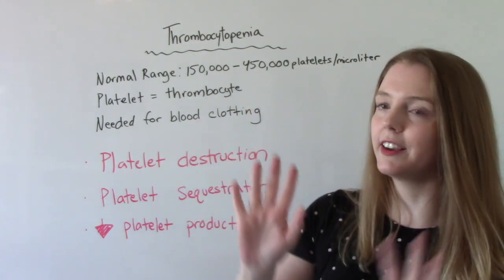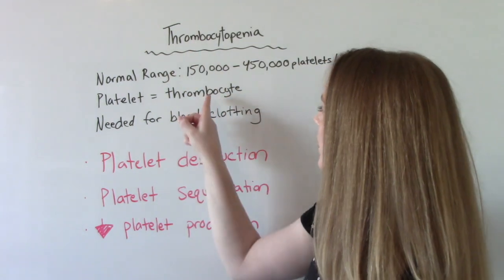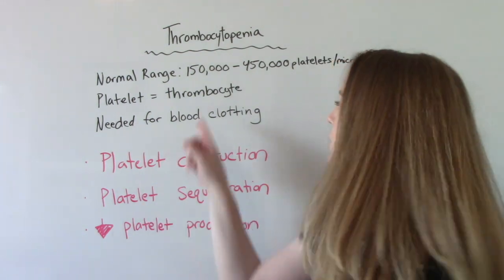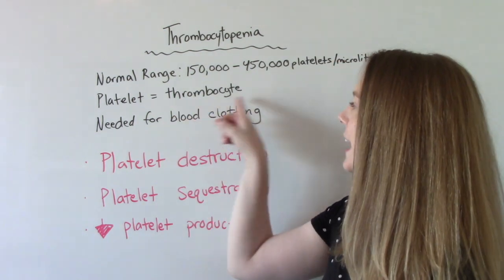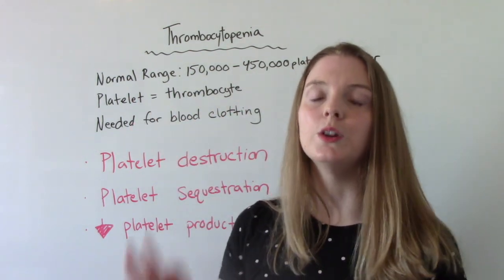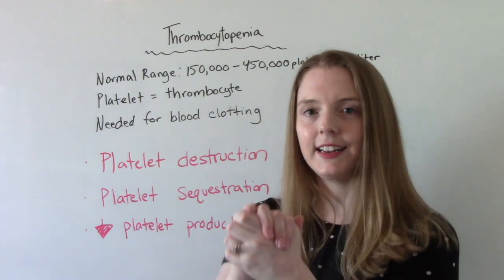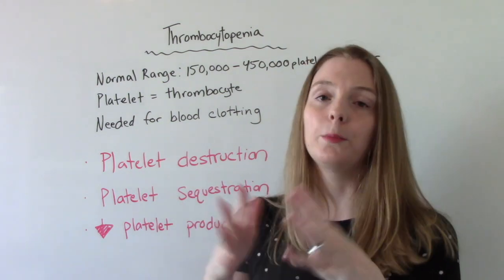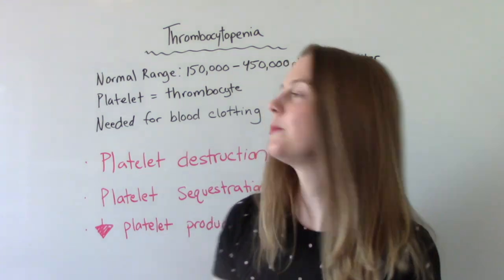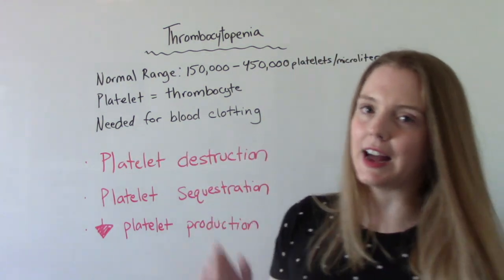And just again as a review, thrombocyte is another word for platelet — blood clotting cells. That's what platelets are because that's what they do: they form clots, they stick together so that our blood can clot, so if we have a cut it can heal. So needed for blood clotting.